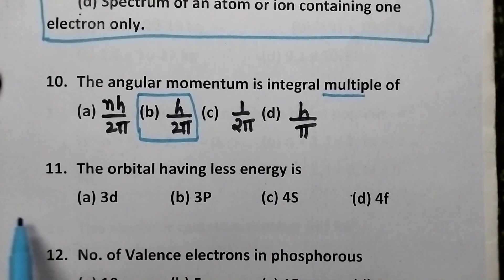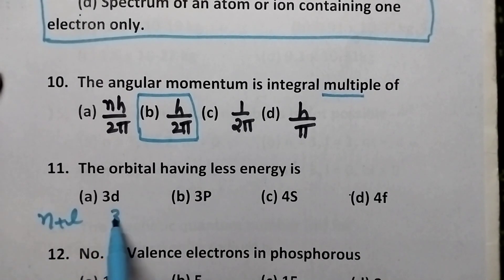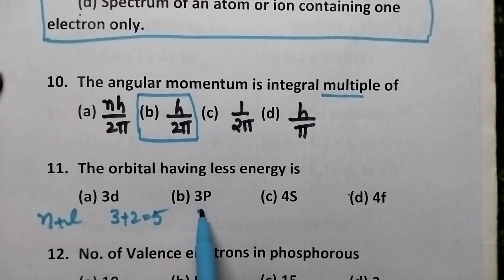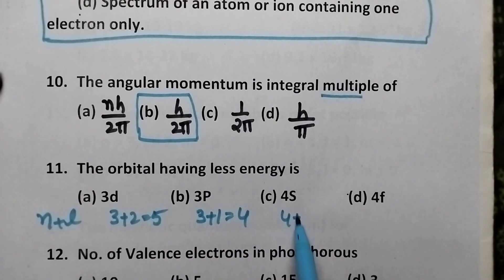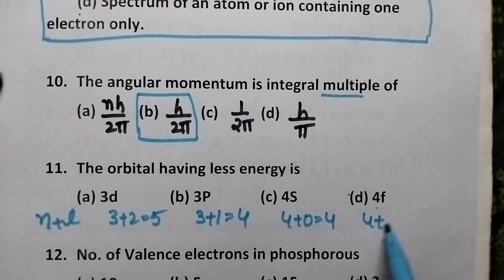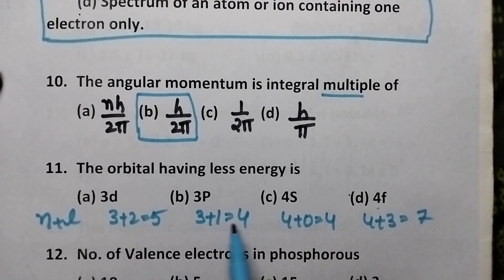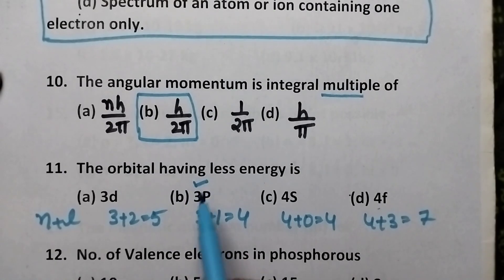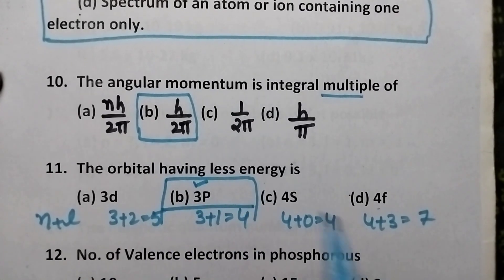The orbital having less energy is — we have to calculate N plus L values. For 3d orbital: 3 plus 2 equals 5. For 3p orbital: 3 plus 1 equals 4. For 4s orbital: 4 plus 0 equals 4. For 4f orbital: 4 plus 3 equals 7. So 3p and 4s orbitals have the same N plus L value. Then we check N value — 3p orbital has the lesser N value, and hence option B is the right answer.